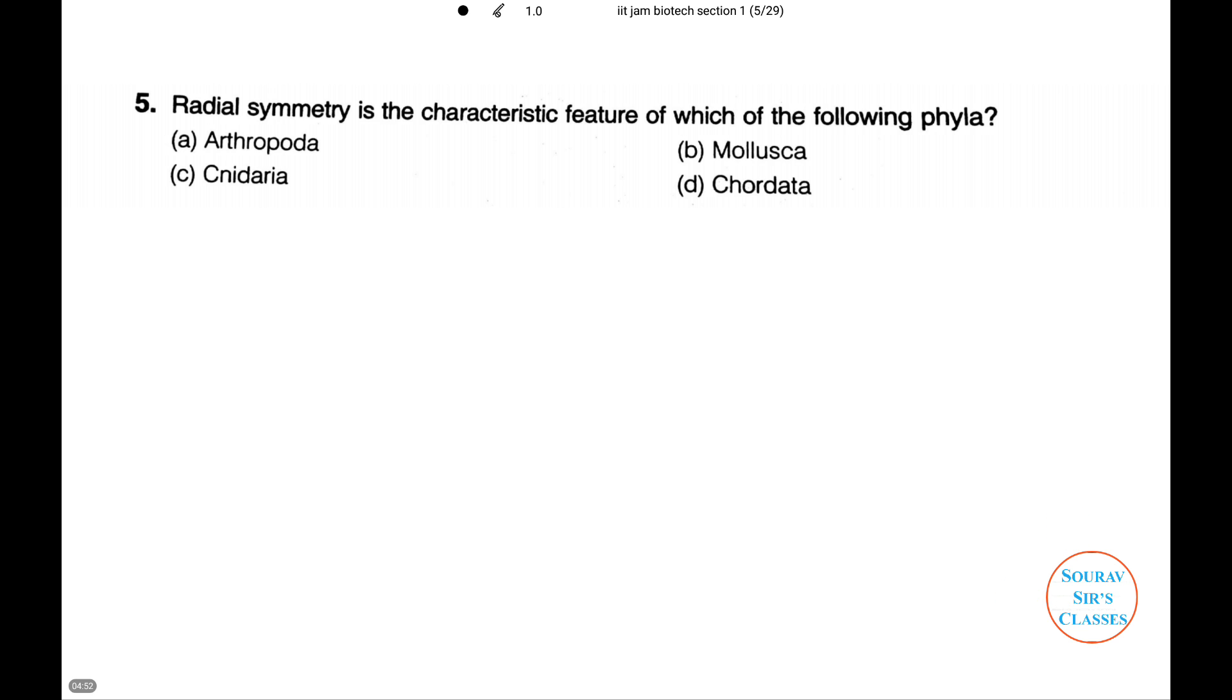Moving on to another question. This is a very important question. Radial symmetry is the characteristic feature of which of the following phyla: Arthropoda, Mollusca, Cnidaria, or Chordata. Let's see what the answer will be. Example or a hint is jellyfish.